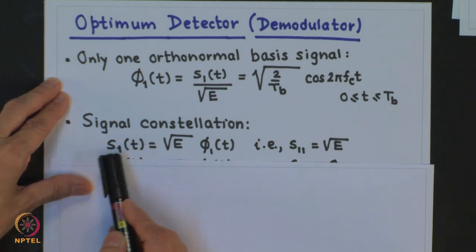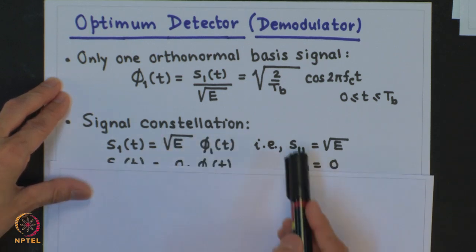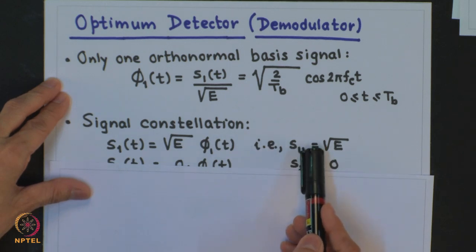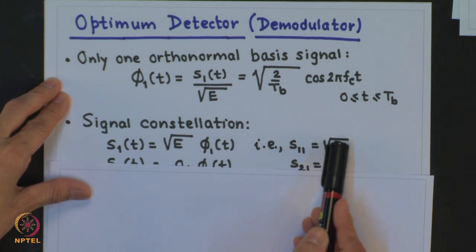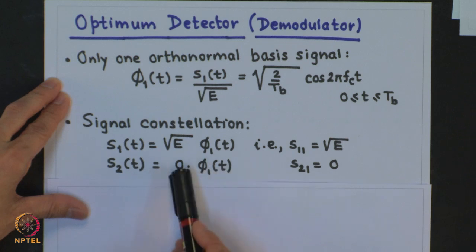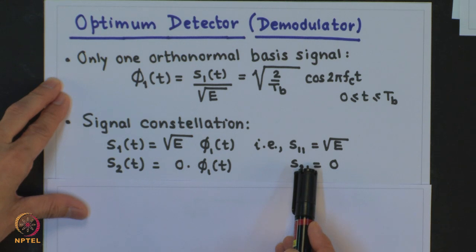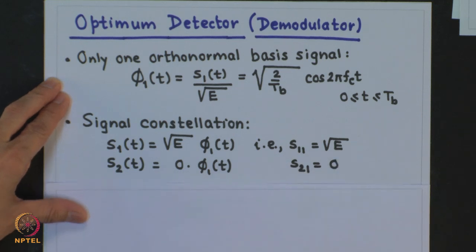For the signal constellation: taking the projection of S1(T) onto phi_1(T) we get root E. So S_11 denotes the projection of S1(T) onto phi_1(T). The projection of signal S2(T) onto phi_1(T) is equal to 0, so S_21, the projection of S2(T) on phi_1(T), is 0.